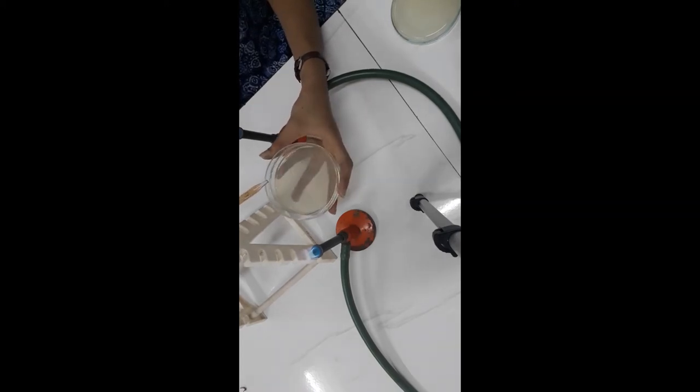Again, I have taken 1 ml of sample and I am going to add it onto a nutrient agar plate. Now I will start putting my spreader into alcohol and will be flame sterilizing it so that any organisms present on the spreader will now die off. And using this spreader, we will spread the water sample.